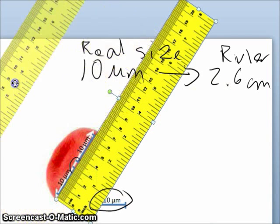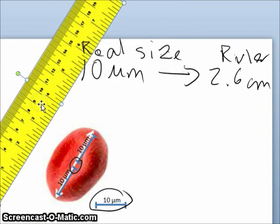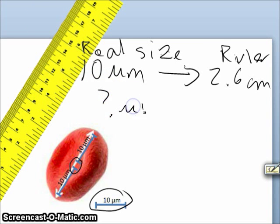I just throw this ruler on the side here ok. Ok so it is about real size of this red blood cell I don't know I'm trying to find out in micrometer here and the ruler say it is 6.6 cm.